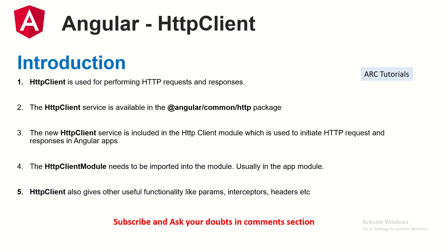Let's talk about Angular HTTP Client. Angular has a built-in module called HTTP Client Module, which is part of Angular Common HTTP, used for performing all HTTP requests and responses. When we make a request — an HTTP call to a backend API or a REST endpoint — that's your request. The data that we get back is the response that we receive from the API. The HTTP Client service is available in the Angular Common HTTP package and is used to initiate HTTP requests and receive responses.